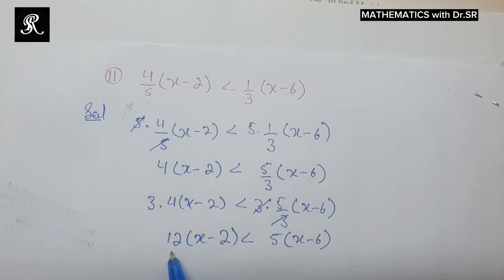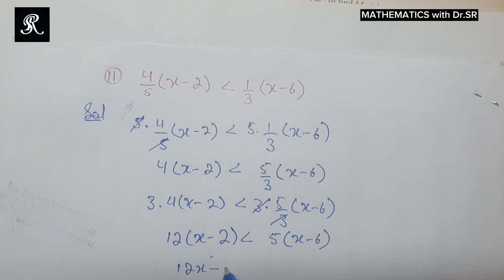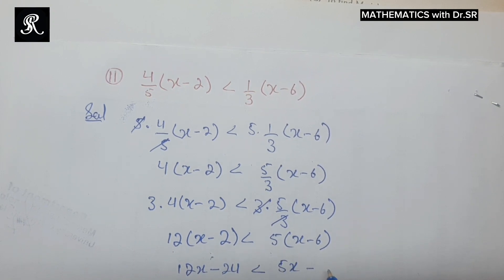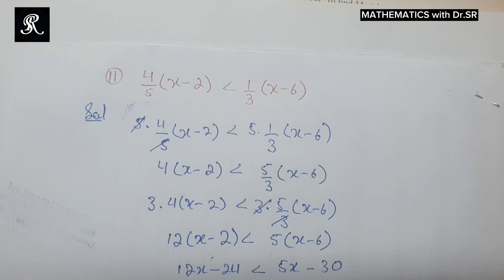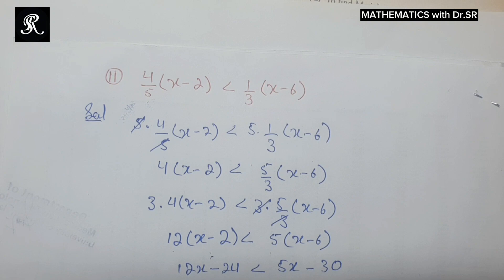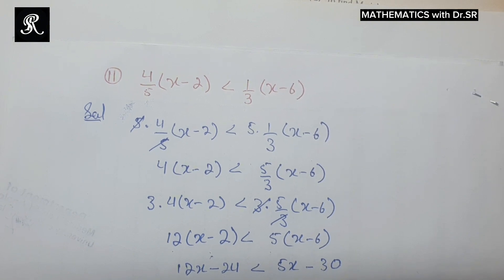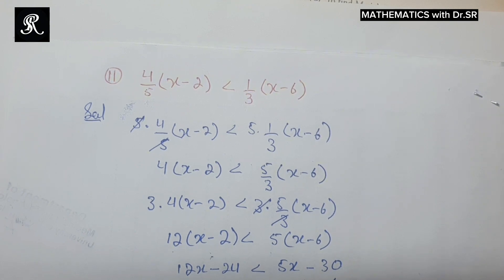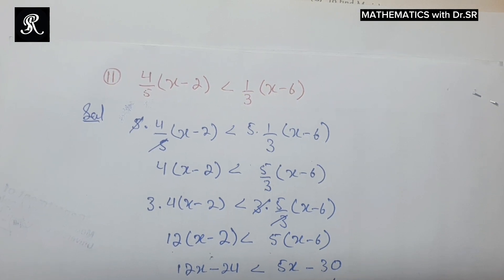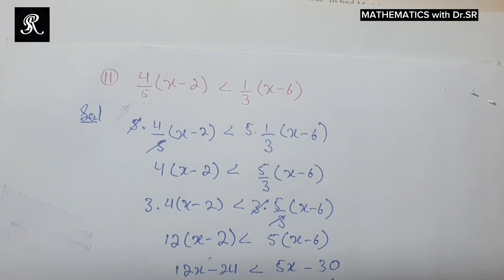Now we need to simplify this inequality for the variable x. We multiply 12 and 5 inside the brackets: that gives 12x minus 24 less than 5x minus 30. We then shift the like terms to the same side, shifting 5x to the left-hand side. Negative 5x and positive 5x cancel out, leaving us with 7x minus 24 less than negative 30.